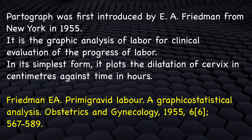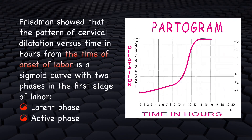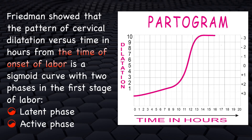Partograph was first introduced by Emanuel A. Friedman from New York in 1955. It is the graphical analysis of labor for clinical evaluation of the progress of labor. In its simplest form, it plots the dilatation of cervix in centimeters against time in hours. Research showed that the pattern of cervical dilatation versus time from the onset of labor is a sigmoid curve with two phases in the first stage of labor: the latent phase and the active phase.